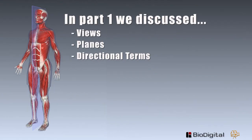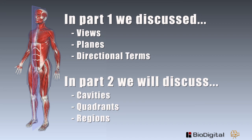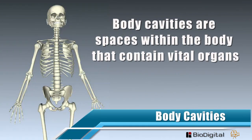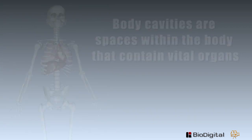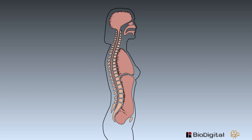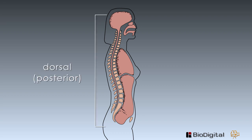In the first video of mapping the body, we discussed the different views, body planes, and directional terms. In this video, we will cover the body cavities, quadrants, and regions. Body cavities are spaces within the body that contain vital organs such as the heart, lungs, and the liver. There are two main body cavities: the dorsal or posterior, and the ventral or anterior cavity. There are also three small cavities that we should include.